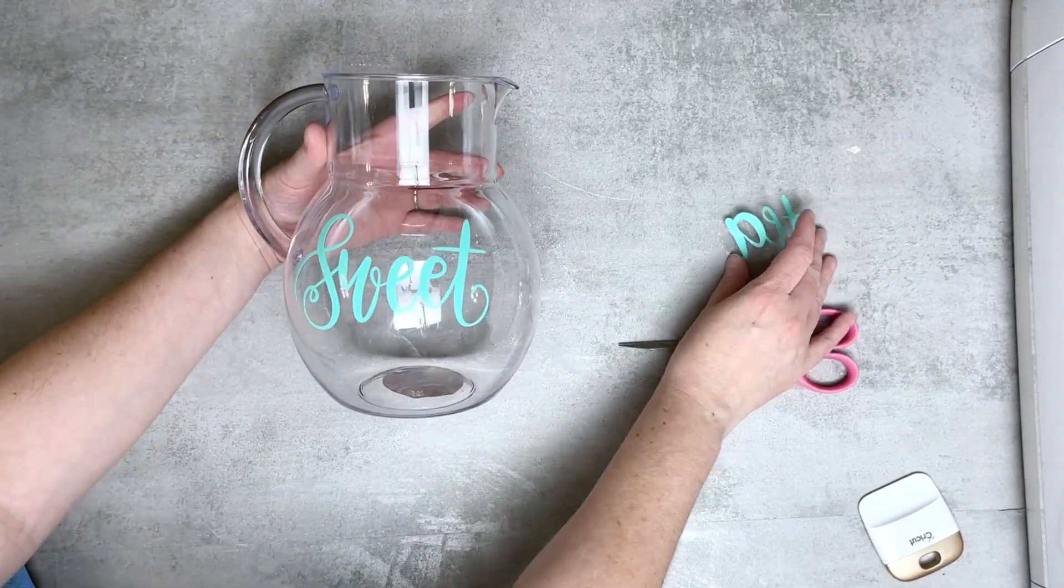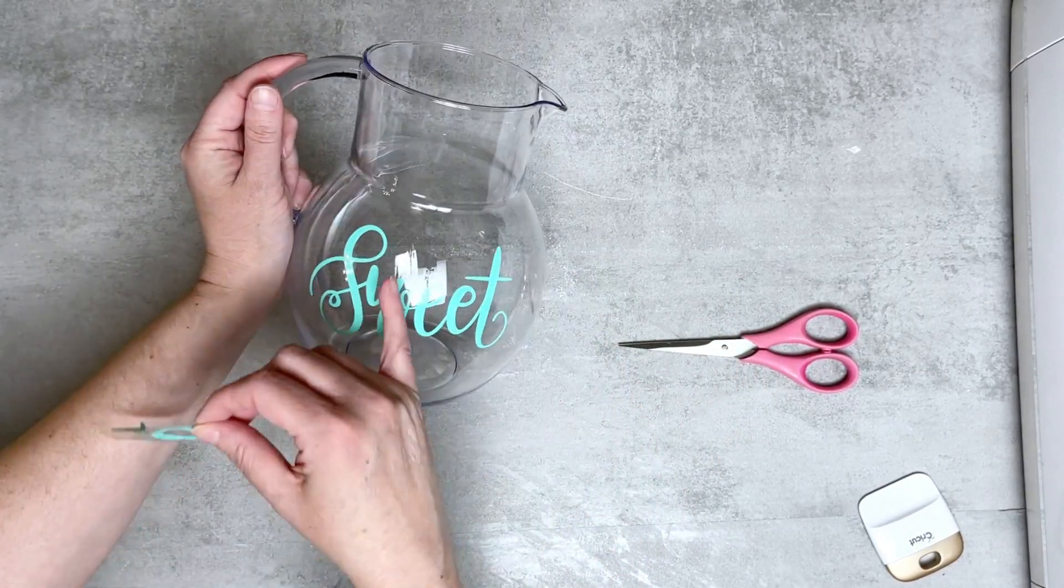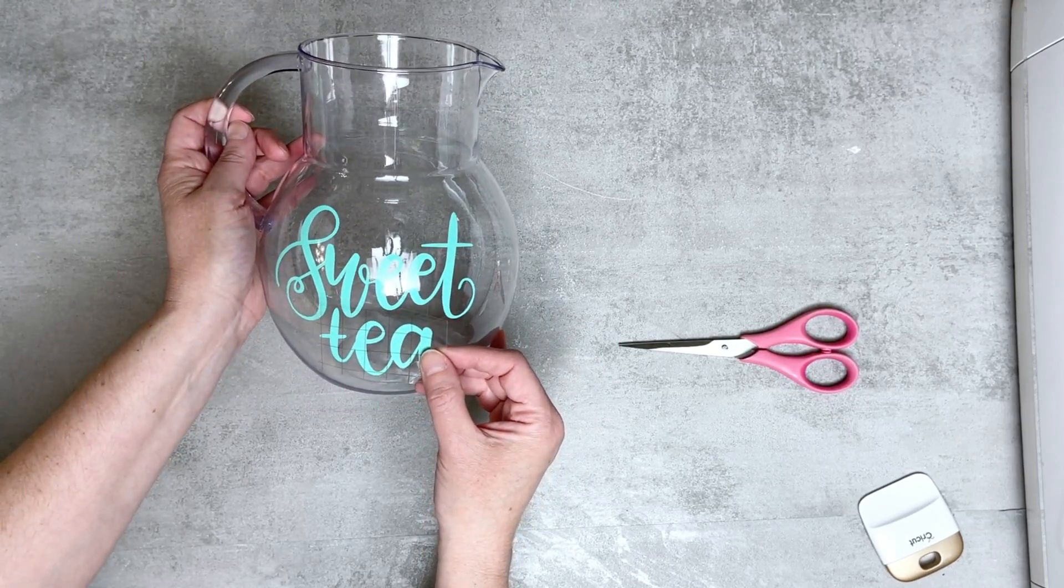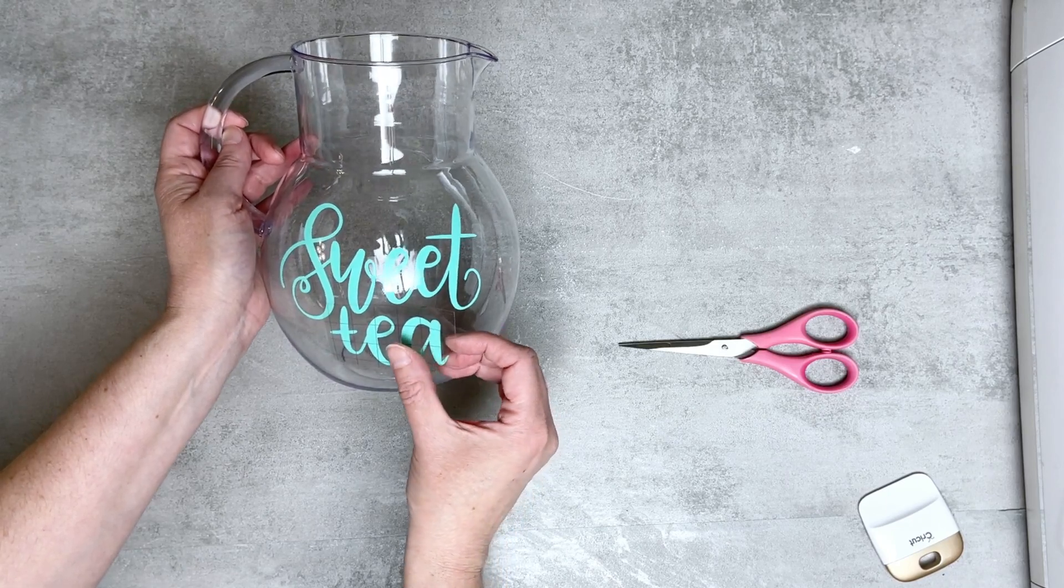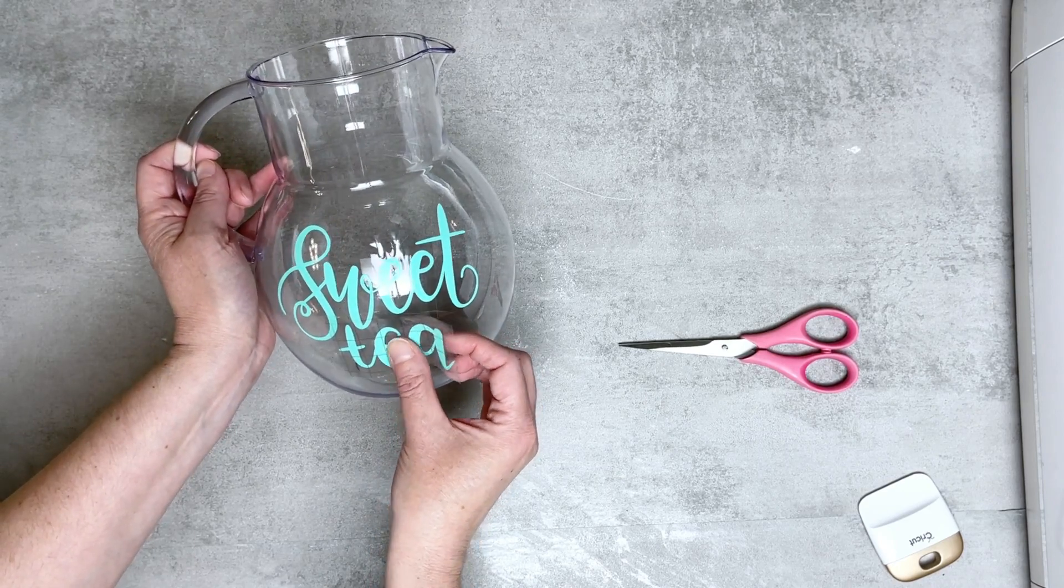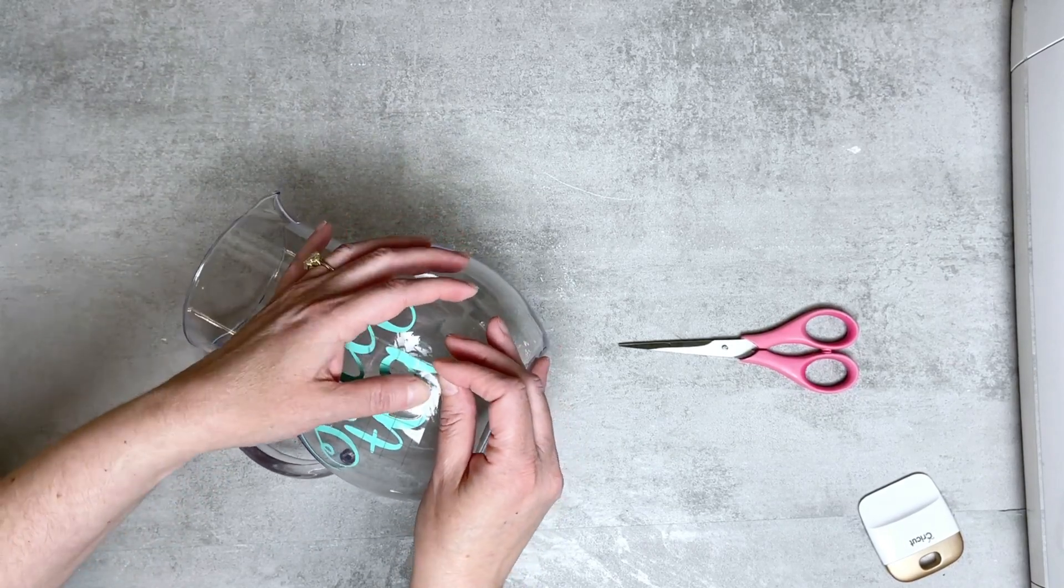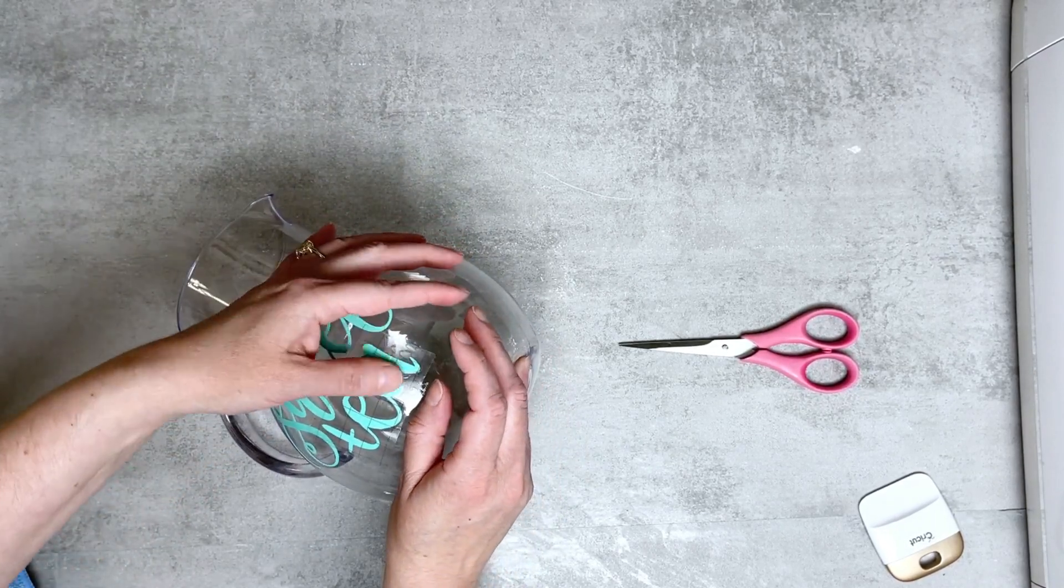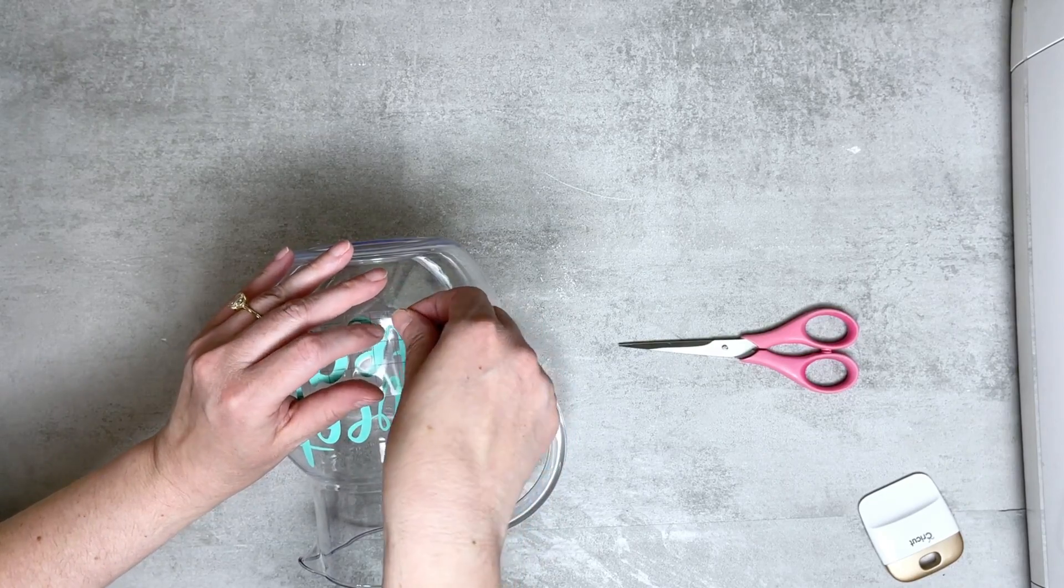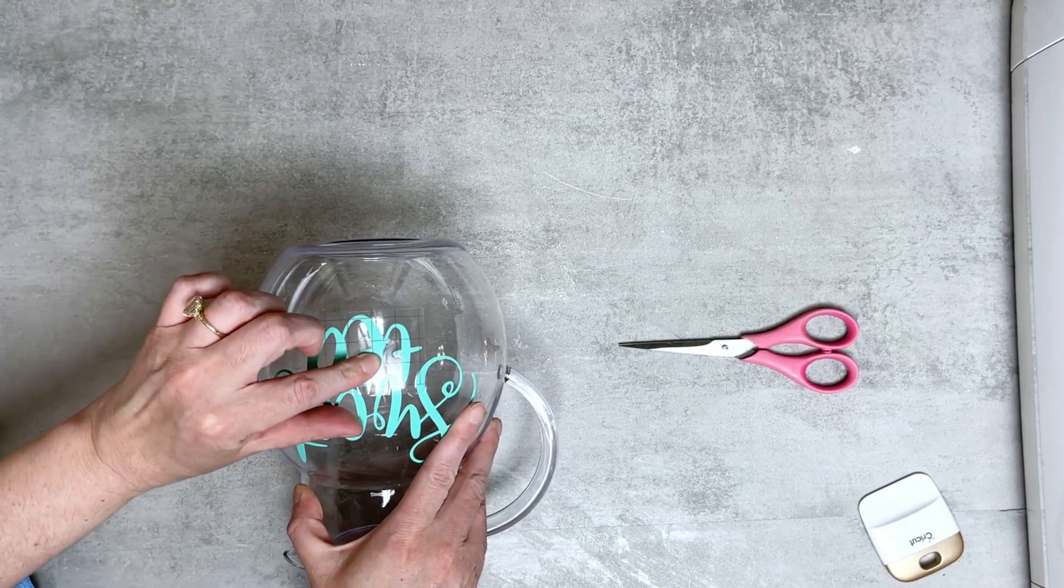So we have that section on now we're ready to apply the next section. We have our smaller decal here. This one should be a lot easier to apply since we can kind of nestle this in to the other section. We're just going to place this here and I'm going to press down on the E here which is that center portion and then just kind of roll this. The nice thing is if you haven't pressed it down it's usually okay for you to still lift it. I'm just pressing this down and out and then I'm going to continue moving towards the left section here.